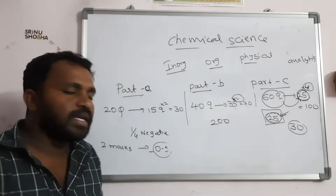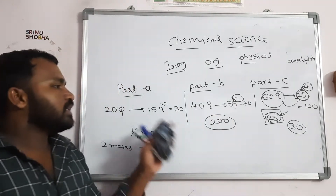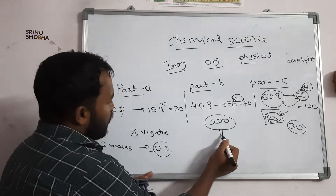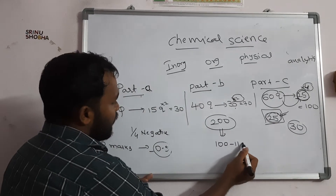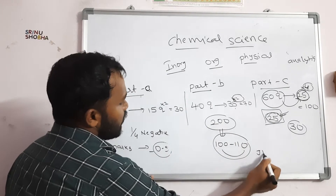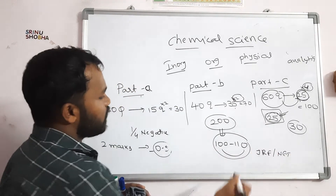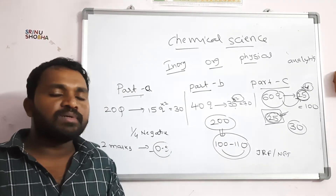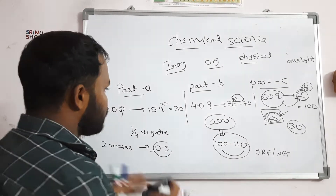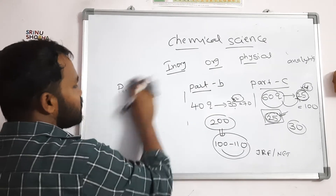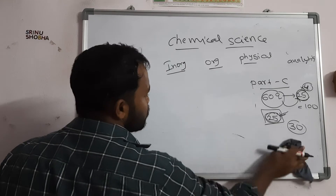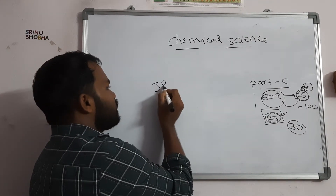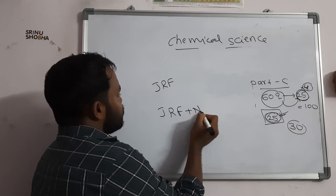From the 200 maximum marks, the cutoff for JRF or NET for OBC generally varies between 100 and 110. If you get good marks in that range, you will get JRF. For the NET cutoff, that may be slightly lower. Whoever qualifies for JRF is also eligible for both JRF plus NET.